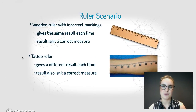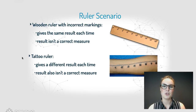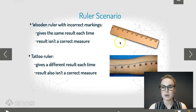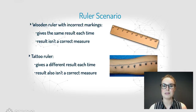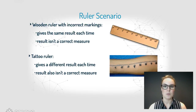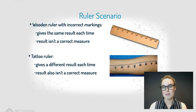If you're a bit confused, that's okay — these can be quite hard concepts. To help, think about two different rulers that you can see on the right here. The top one is made out of wood and the bottom one is a tattoo of a ruler on someone's arm. The wooden ruler has incorrect markings — it was made by someone who wasn't sure about their measurements. While it gives the exact same measurement each time, those measurements are completely wrong — it might tell you your page is 65 centimeters. You'll get the same measurement every single time you use this dodgy ruler, but it's not a correct measure.